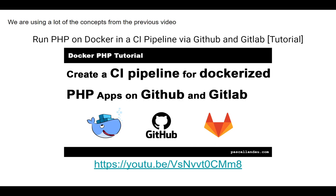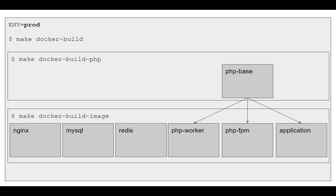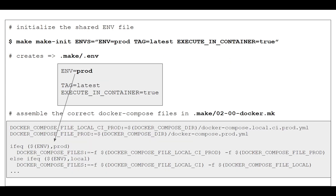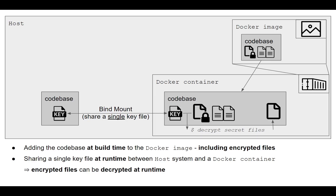To make all of that work, we will be using a lot of concepts from the previous video: Run PHP on Docker in a CI pipeline via GitHub and GitLab. We will use the prod environment to build our Docker setup, create images for all Docker services, and initialize the environment via the make init command that will provide the environment as a prefix to the docker-compose command. The environment will also be responsible for selecting the correct docker-compose configuration files. We will build a Docker image that includes the full codebase including all the encrypted files, and when the containers start, we will share a secret GPG key to decrypt the secrets on the fly at runtime.